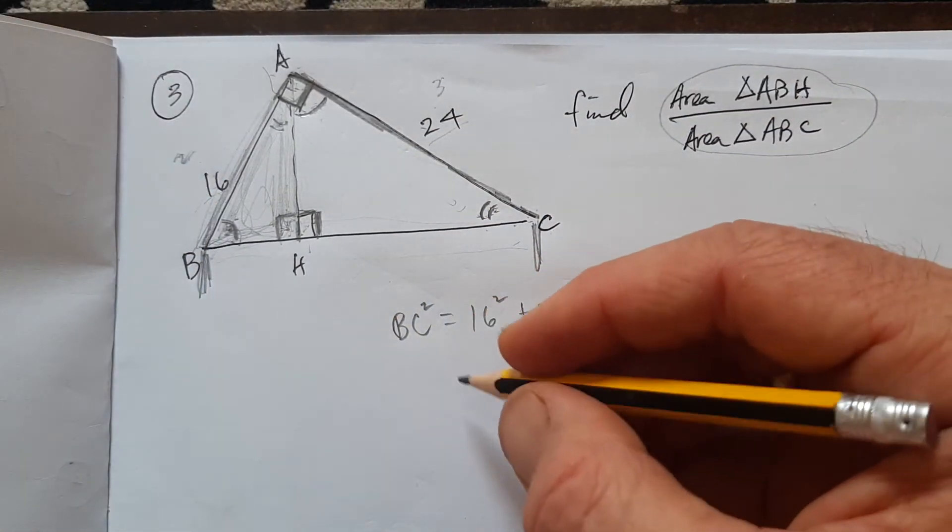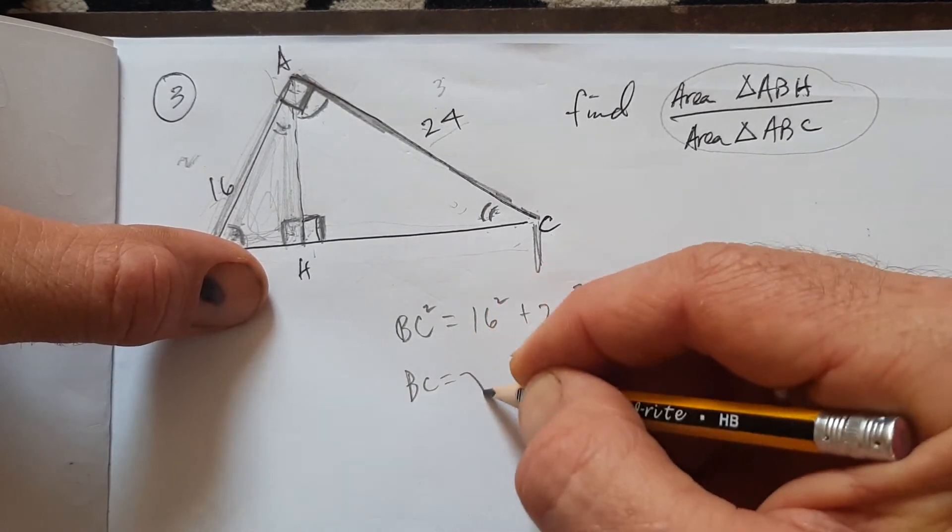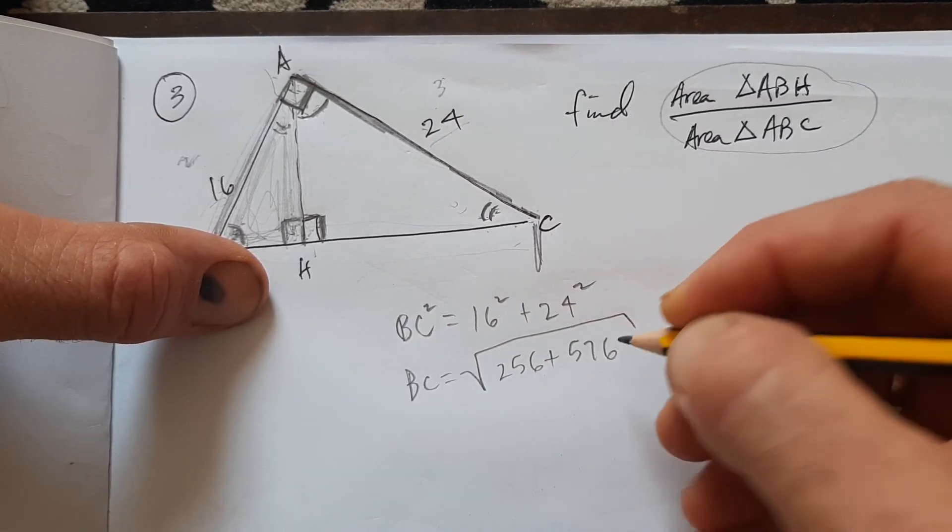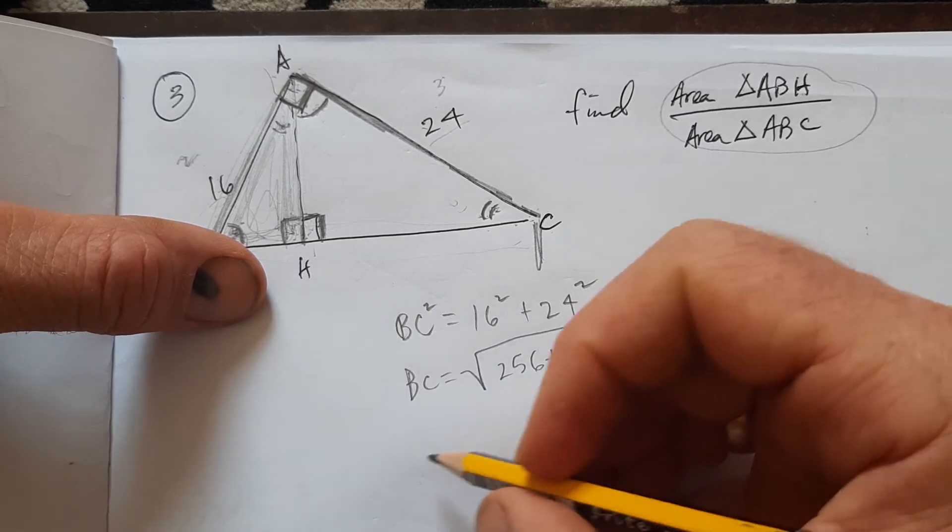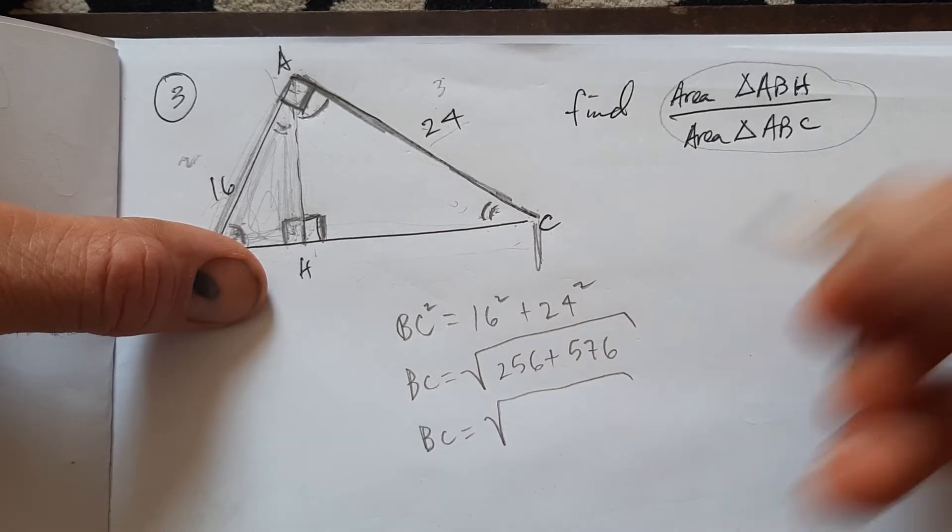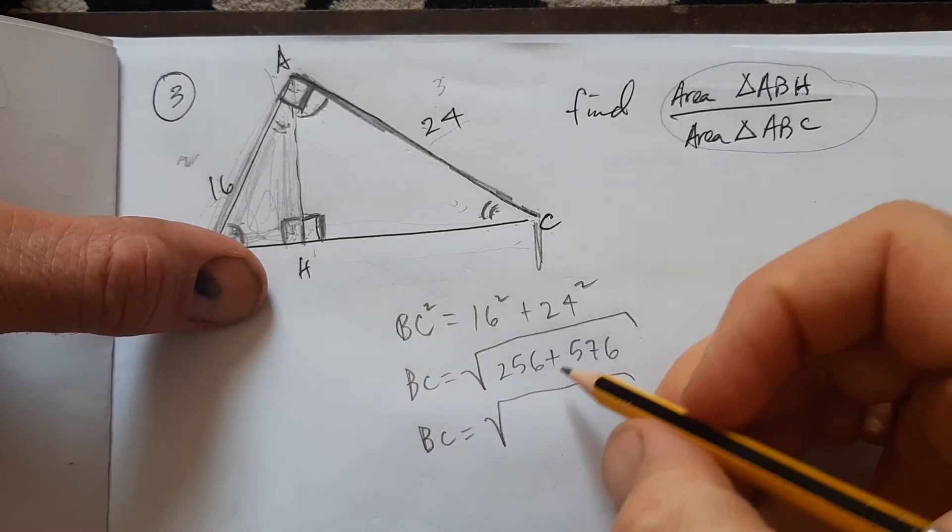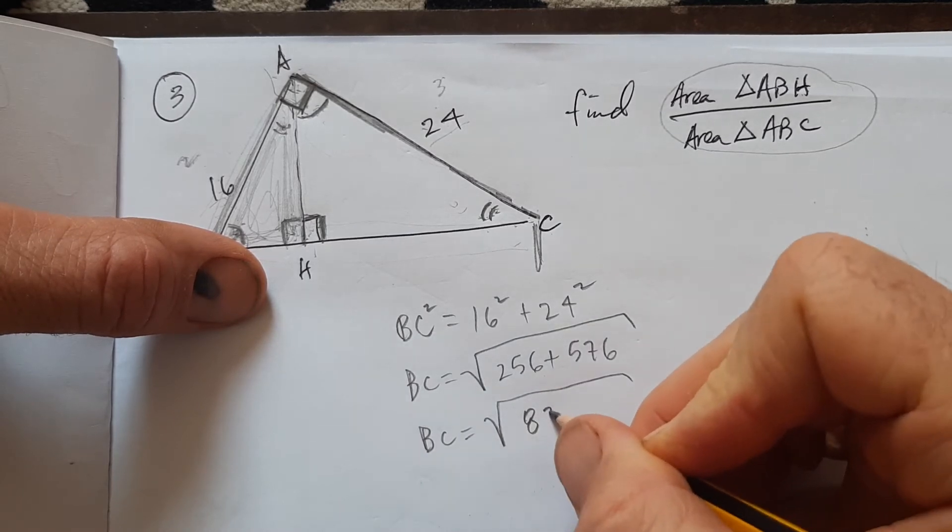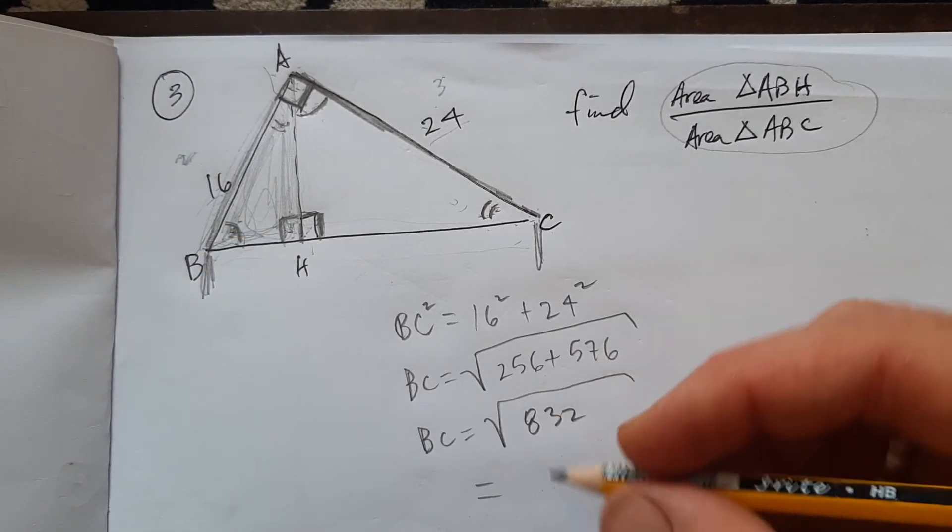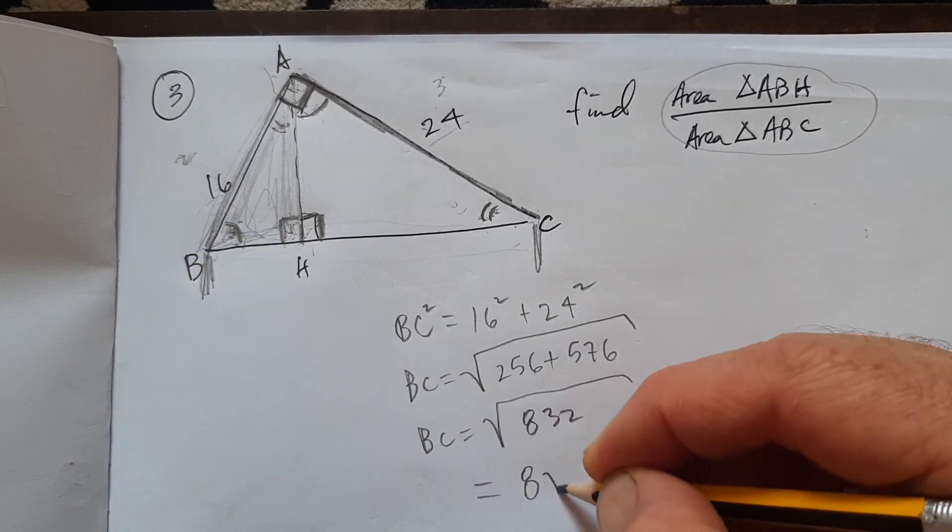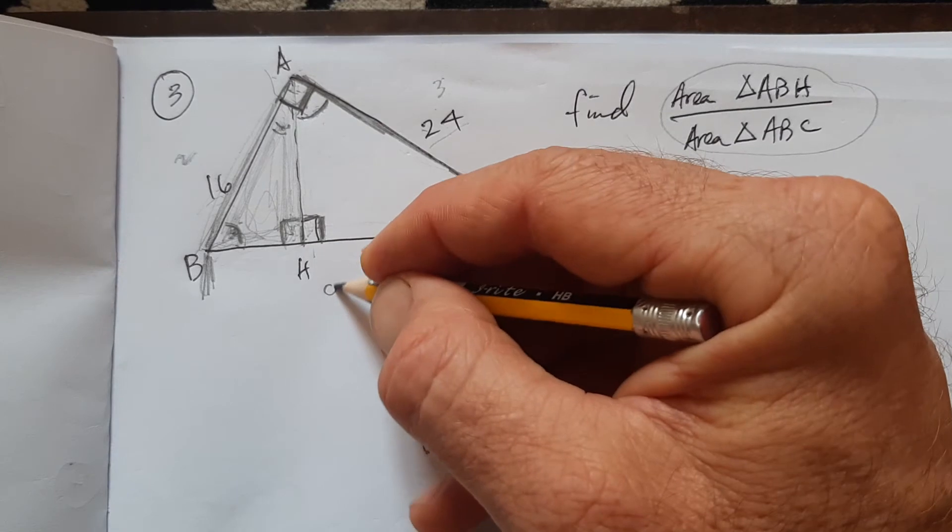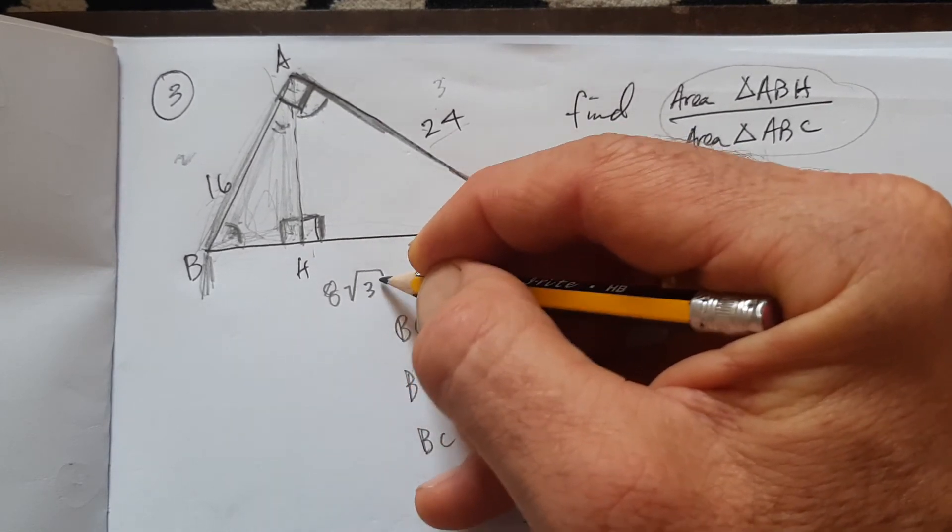Let's see. I'm not sure if you remember that or not. BC equals the square root of 256 plus 576. I went ahead and checked these on the calculator to make sure I wasn't messing up. BC equals the square root of, what is it? I forgot what it was. 832, I think. And that's got to equal that 8 square root of 13. So that's the length of BC, 8 square root of 13.